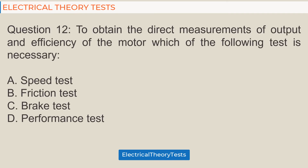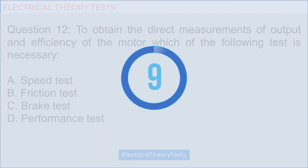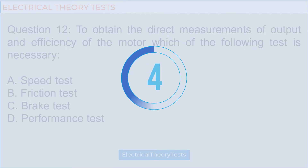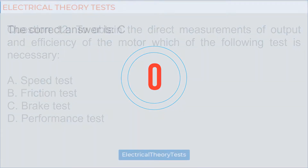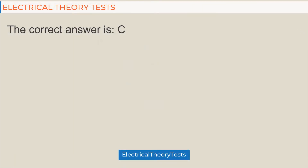Question 12: To obtain direct measurements of output and efficiency of a motor, which test is necessary — a) speed test, b) friction test, c) brake test, d) performance test. The correct answer is c) brake test.